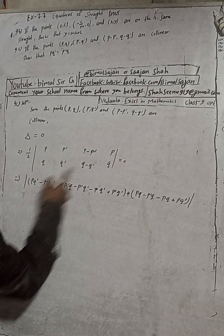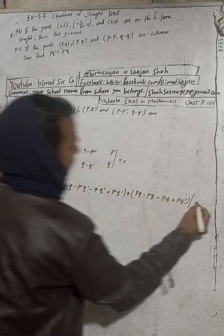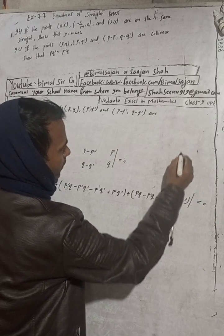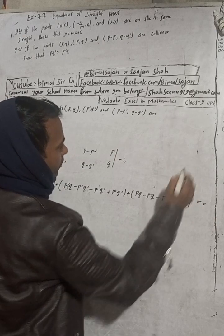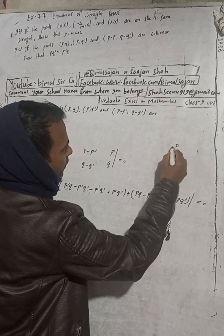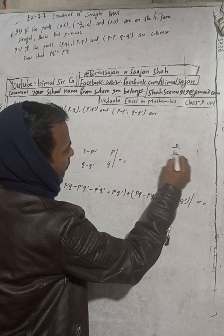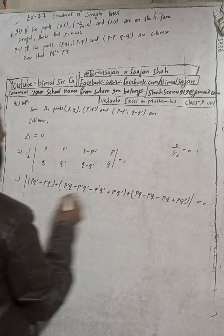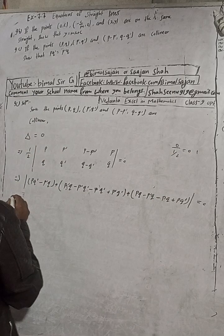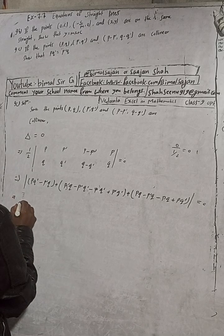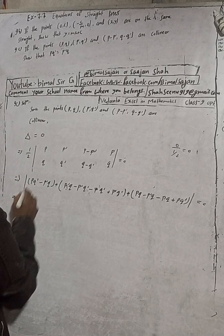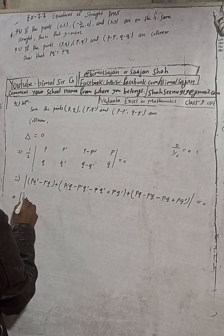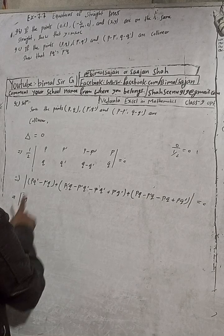Now here it equals zero — zero by one-half equals zero. Zero divided by one-half equals zero.